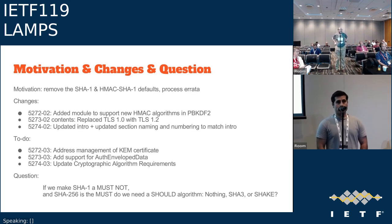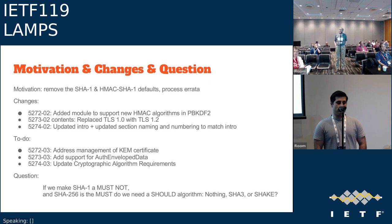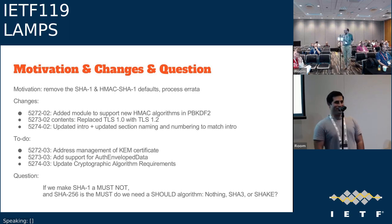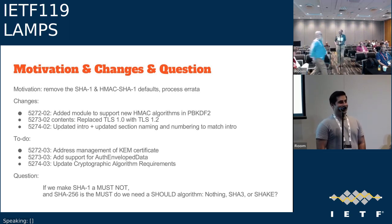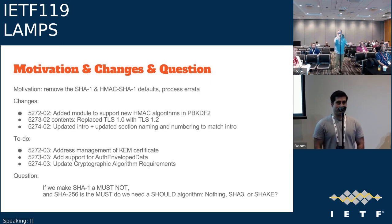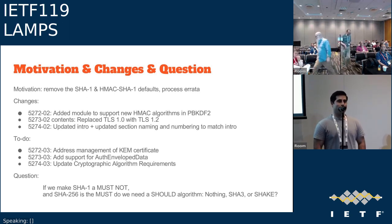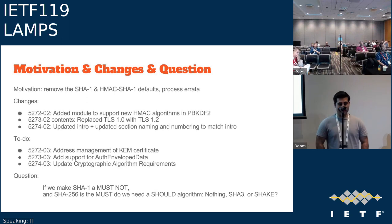Scott: A quick question — one of your changes is to replace TLS 1.0 with 1.2. Is there a specific reason you didn't go all the way to TLS 1.3? Sean Turner: If you look at the UTA BCP, it says you're okay to keep doing 1.2, and if you're in an environment where you can use 1.3, you should prefer it. So we're just following what the BCP says — it's 1.2 or later.